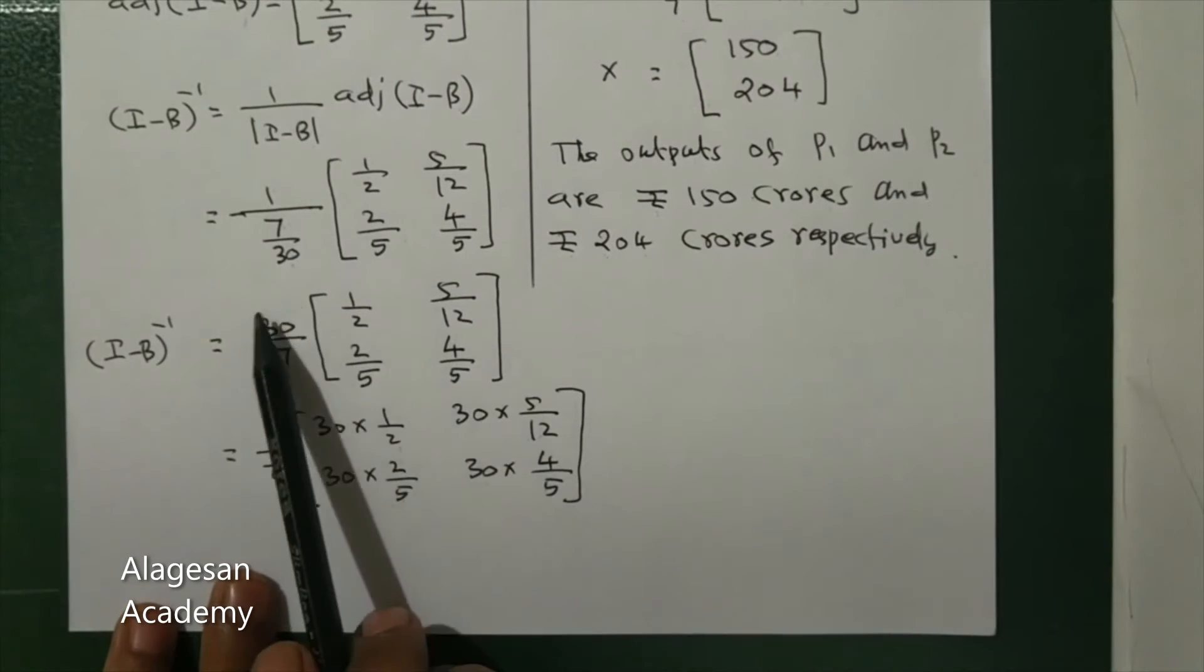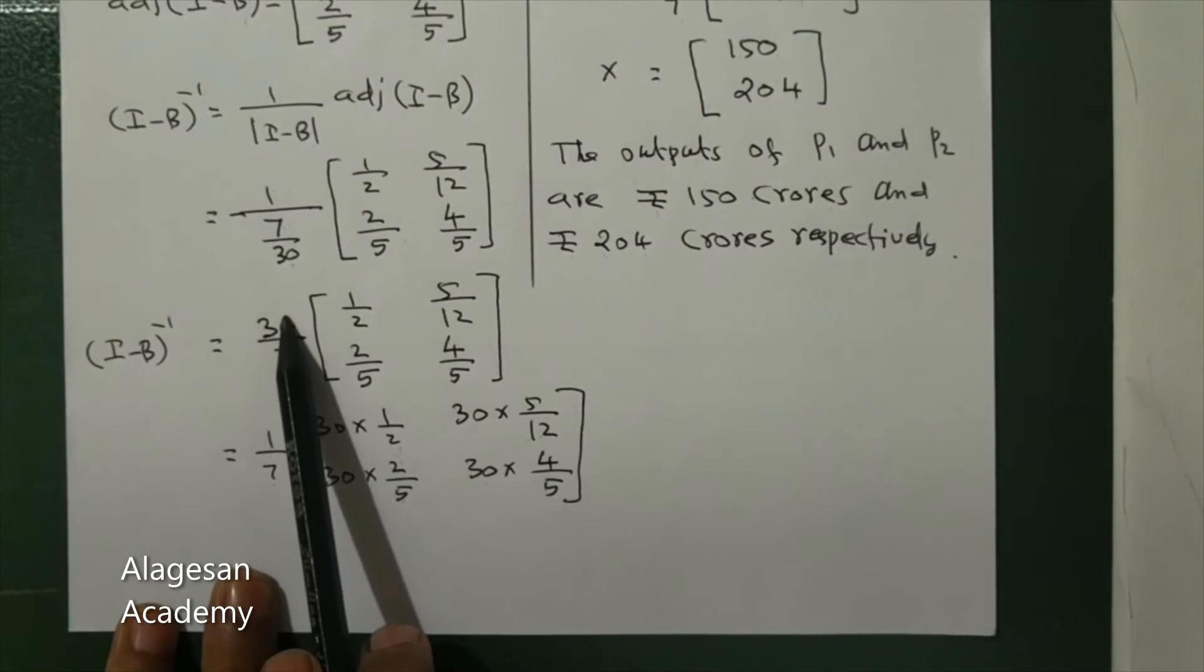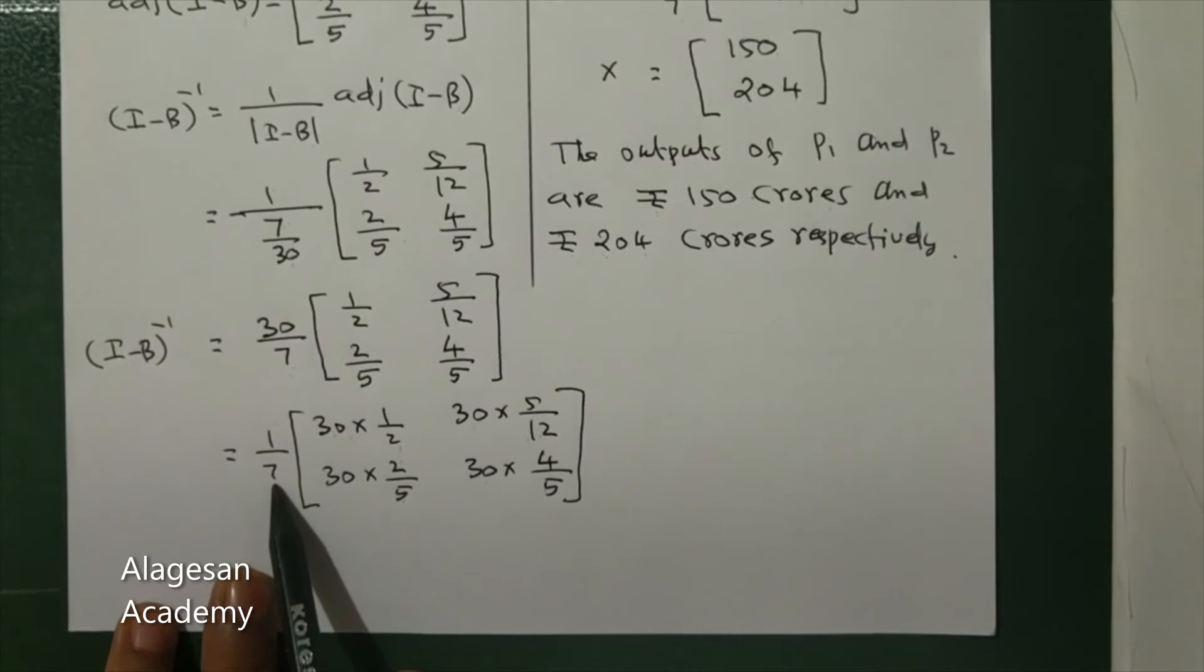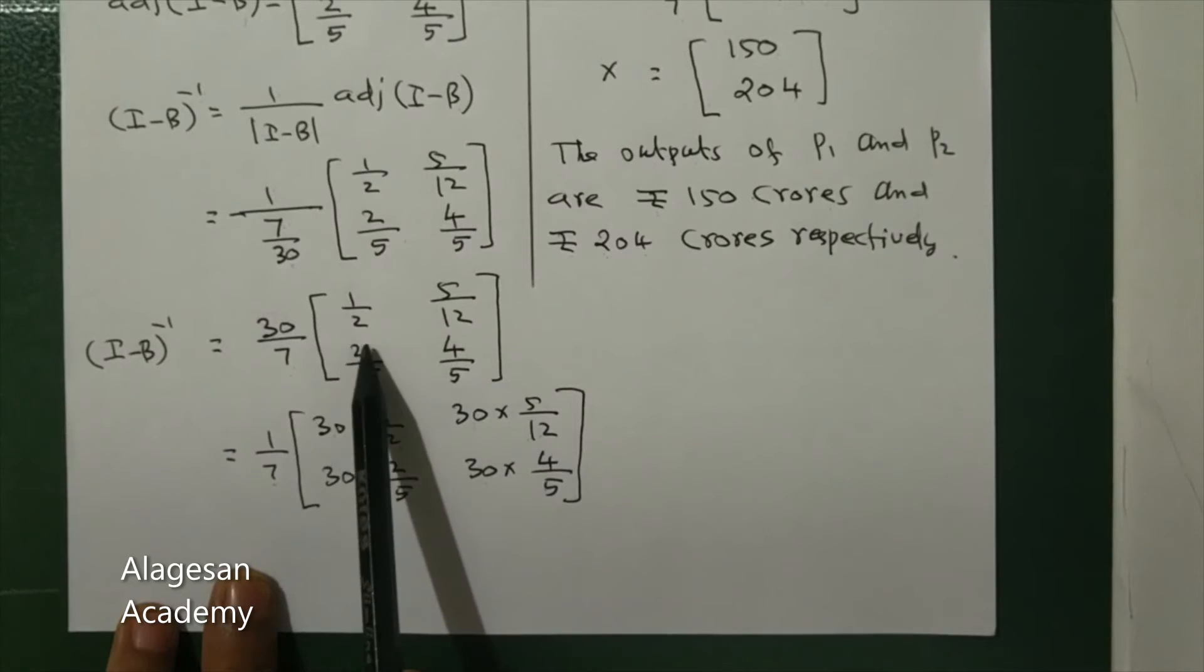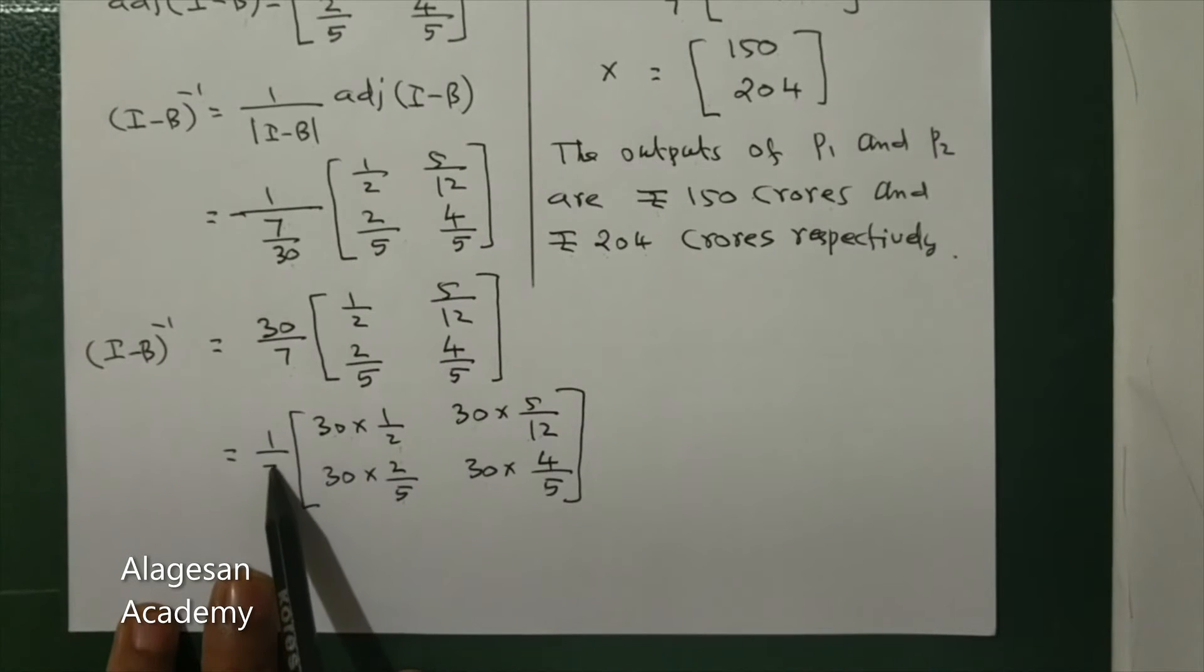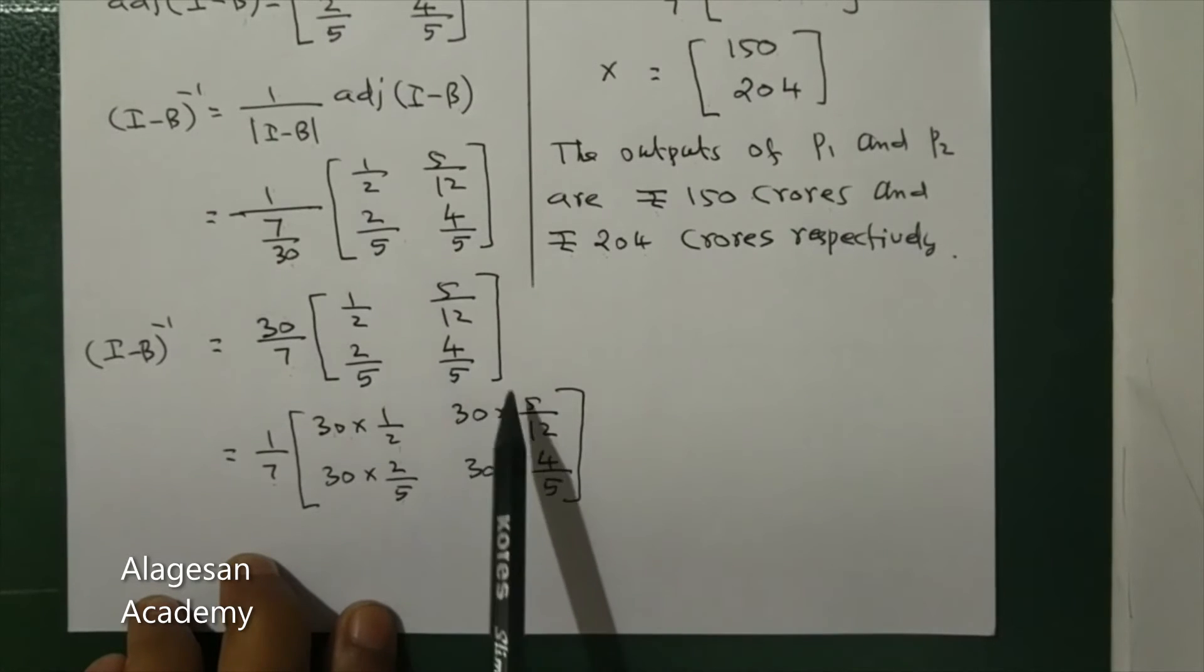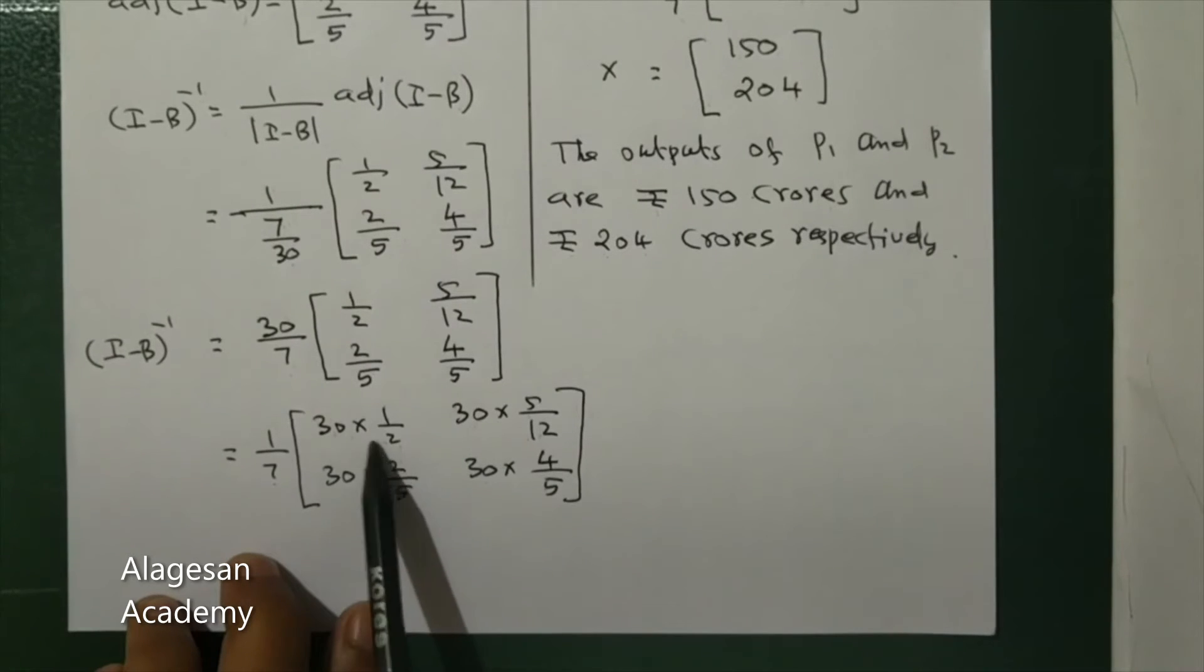We multiply: 1/7 times 30 times each element. So 30 times 1/2, 30 times 5/12, 30 times 2/5, 30 times 4/5. After canceling, we get the simplified values.